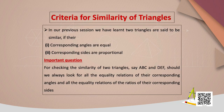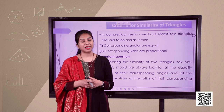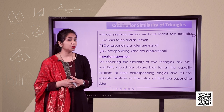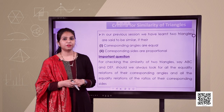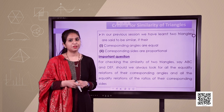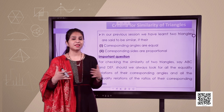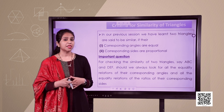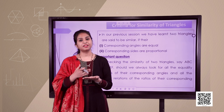Now we have reached another important topic: criteria of similarity of triangles. We know that if two triangles are similar, corresponding angles are equal and their sides are in proportion. But is it necessary to show all corresponding angles are equal or all sides are in proportion to prove similarity? The answer is no, and for this we have different criteria.